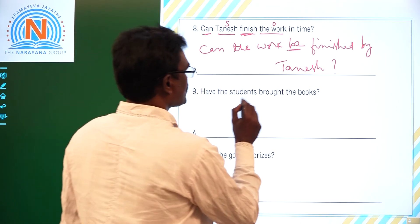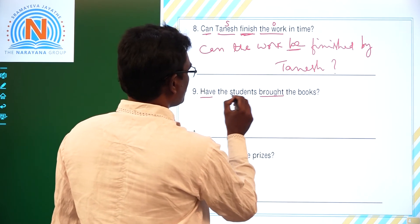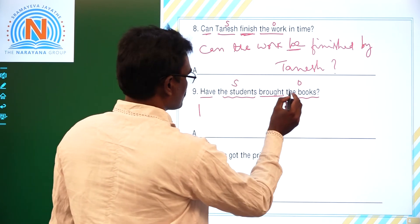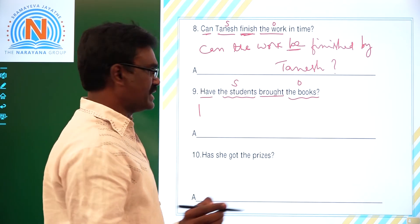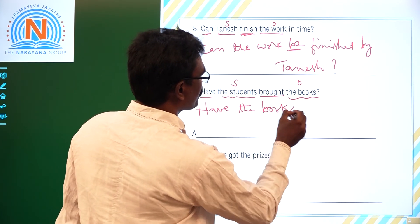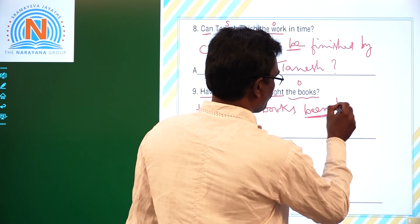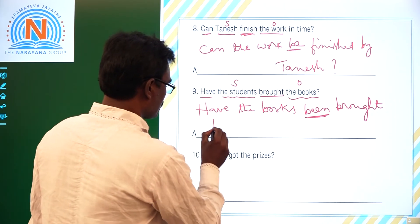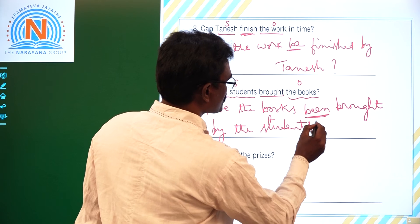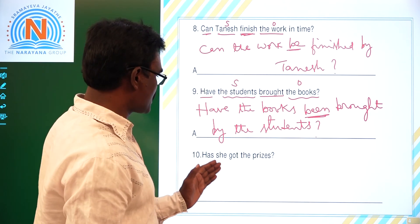Ninth one: 'Have the students brought the books?' This is present perfect tense. 'Have' is the helping verb, 'brought' is the main verb, 'the students' is the subject, and 'the books' is the object. 'The books' is plural, so we use 'have.' We write 'been' and then V3 'brought.' The subject 'the students' becomes the object. Answer: 'Have the books been brought by the students?'